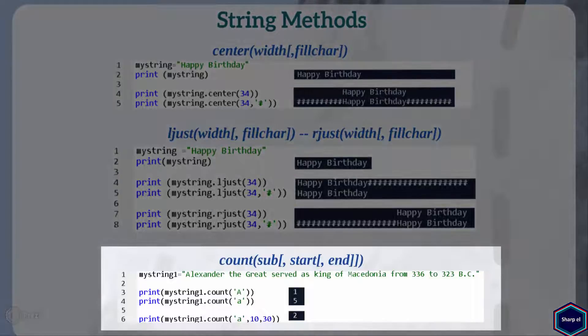The count method returns the number of occurrence of a substring sub within a string. By default, the start index argument is set to 0 and the end index argument is set to total length of the string. In this example, I count the occurrence of capital and small letter A within my string. In my next example, I have set the start index argument to 10 and end index argument to 30. Now the count method only counts the occurrence of alphabet A only within the substring from index value 10 to 30.